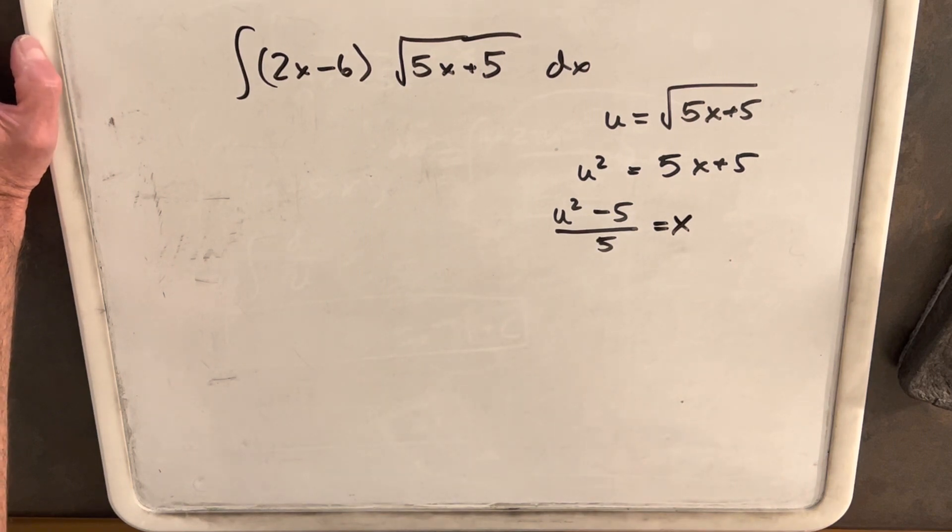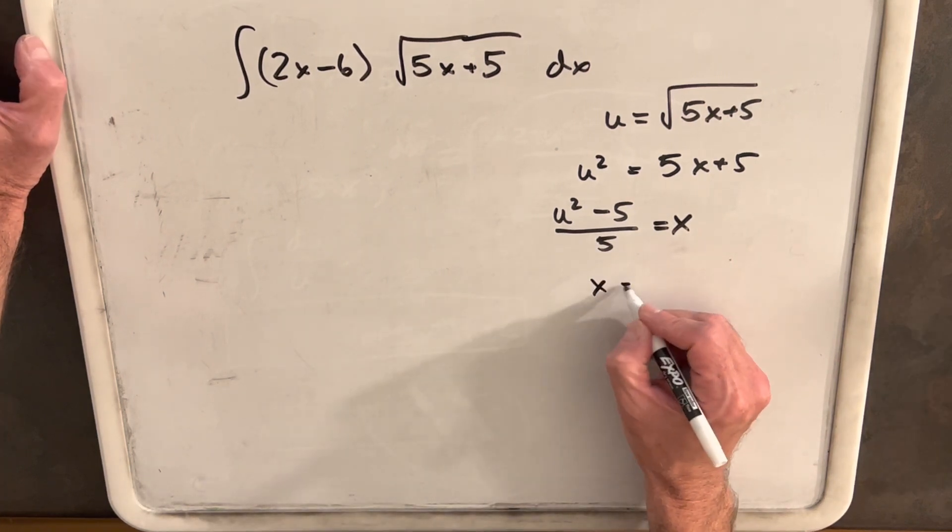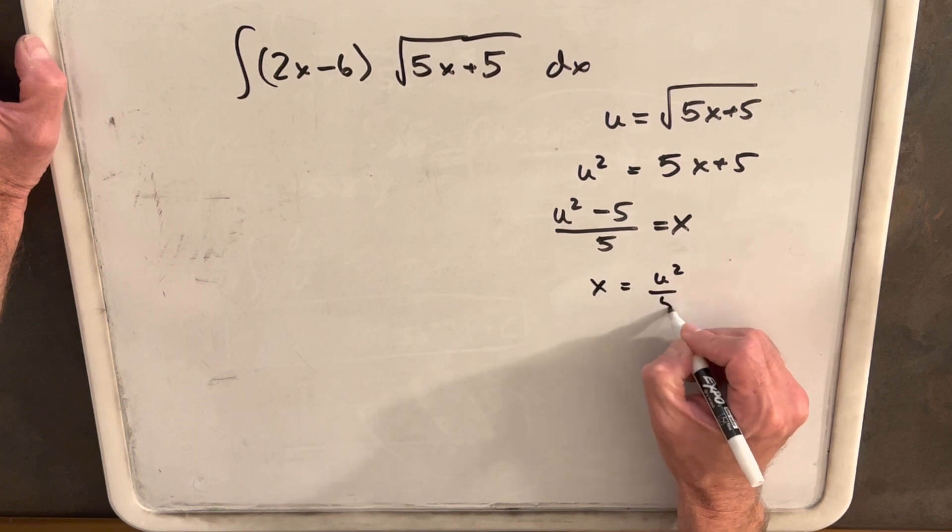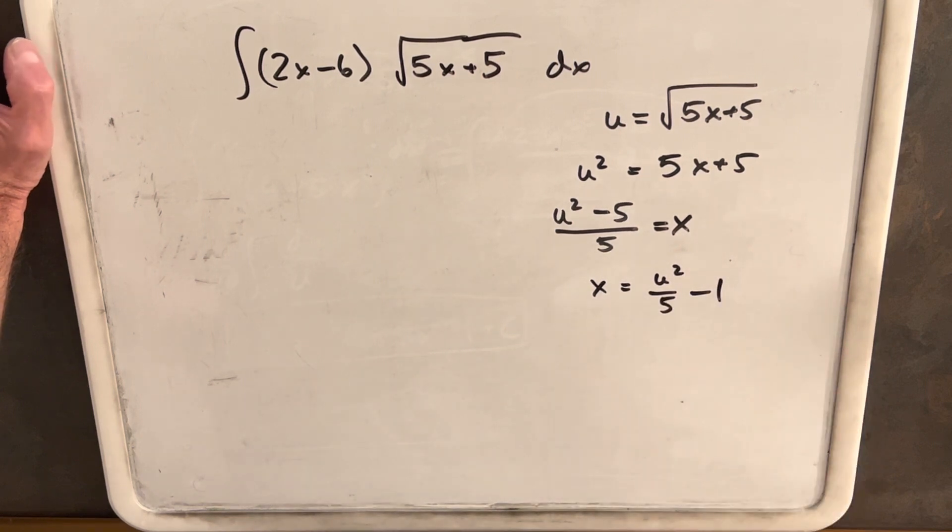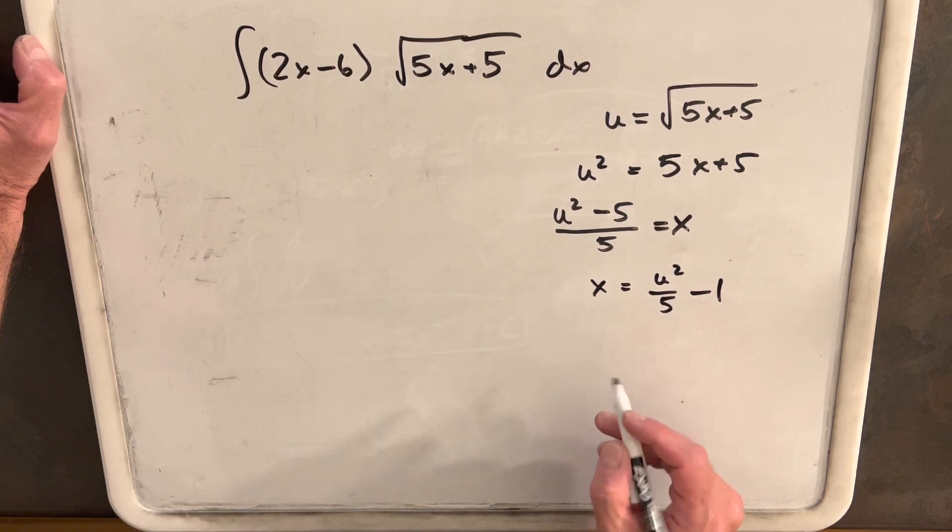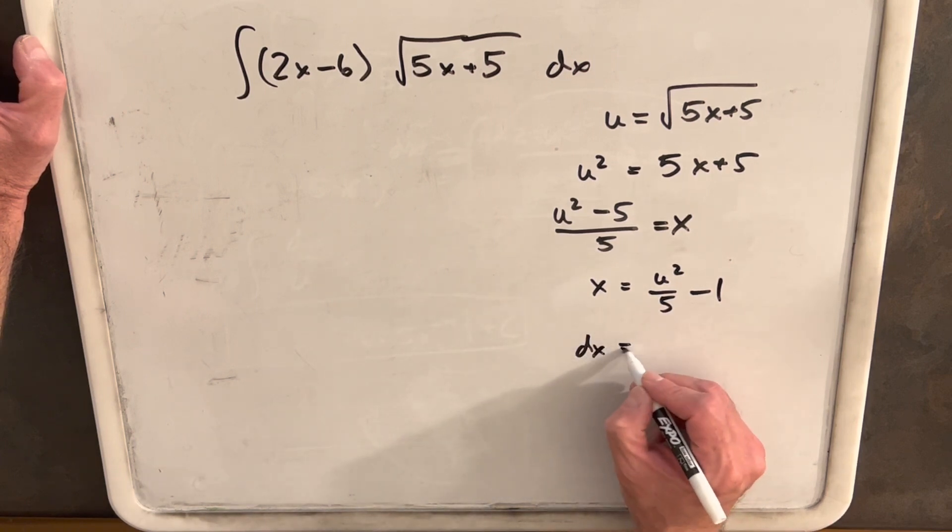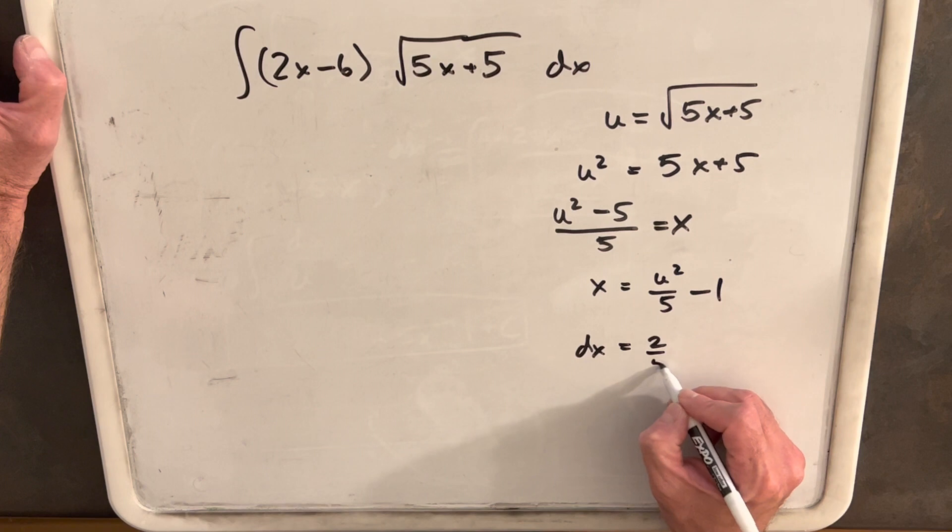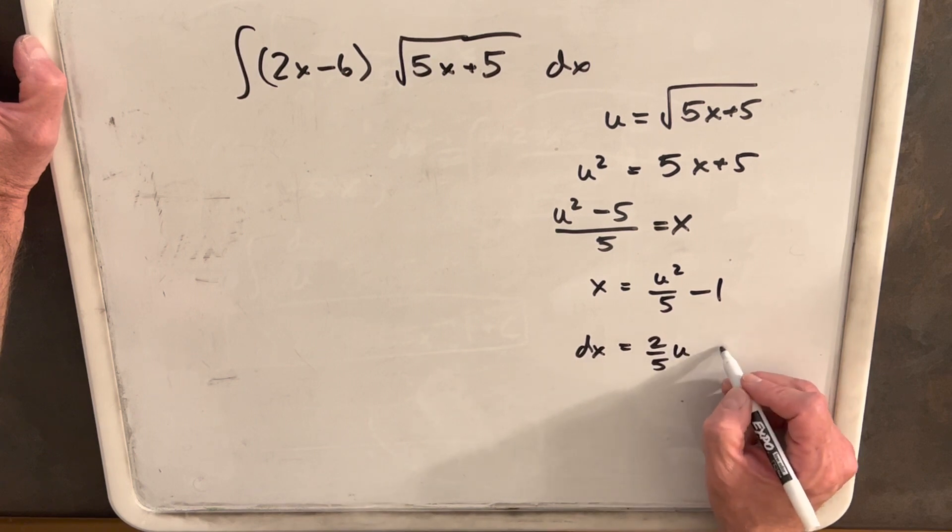And I'm just going to rewrite this thing as x equals u squared over 5 minus 1. I just like getting that form better separated out. And then we'll get the derivative of x to find our dx. And this is going to be 2 fifths u du.